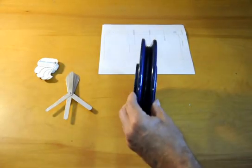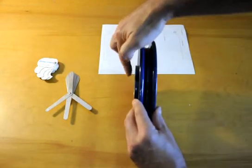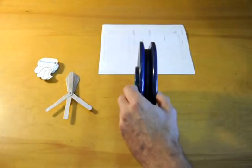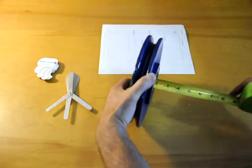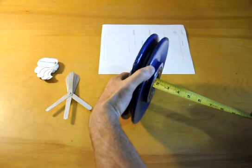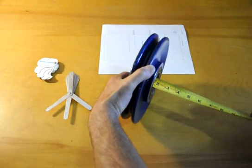After that measure the hub width. You can do this by putting the tape measure through the shaft and here you can see that the hub width is one and three quarters of an inch.